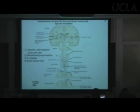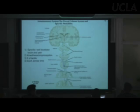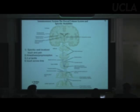Touch across time: a standard clinical test is to trace a letter on someone's back and ask what it is. Someone damaged in this system can't tell you — they can't integrate touch across time.